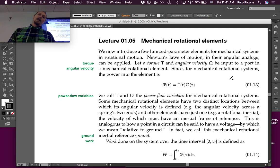Let a torque T and angular velocity ω be input to a port in a mechanical rotational element. Since for mechanical rotational systems, the power into an element is the product of the torque and the angular velocity, we call the torque and angular velocity the power flow variables.